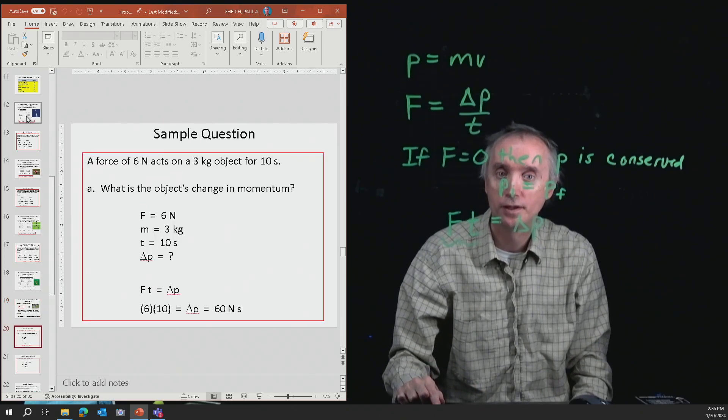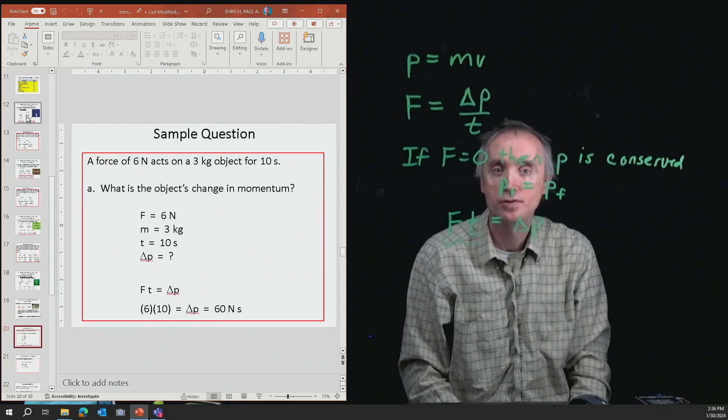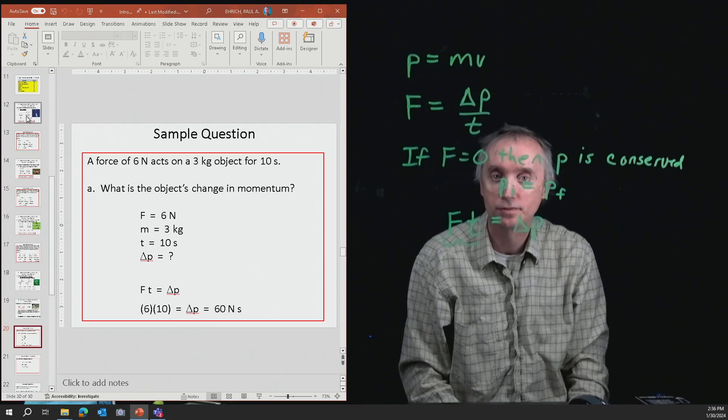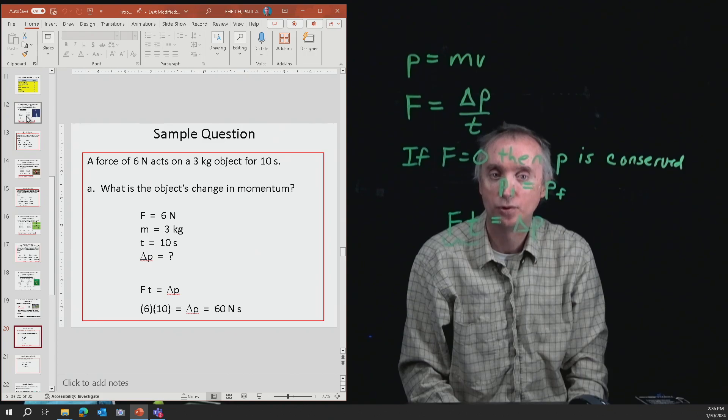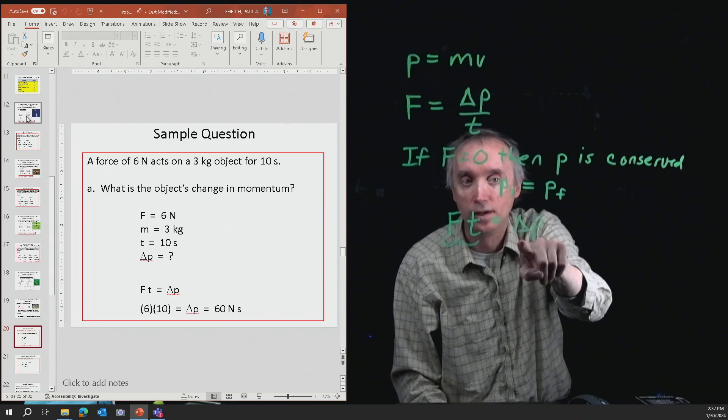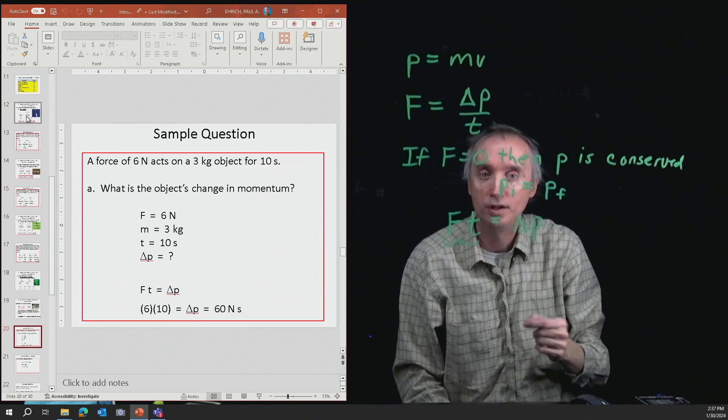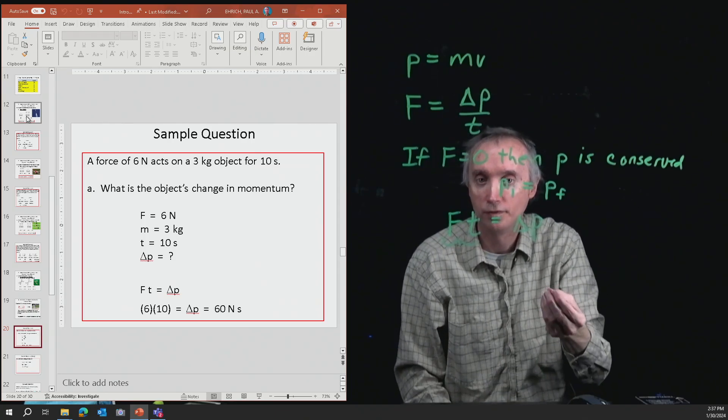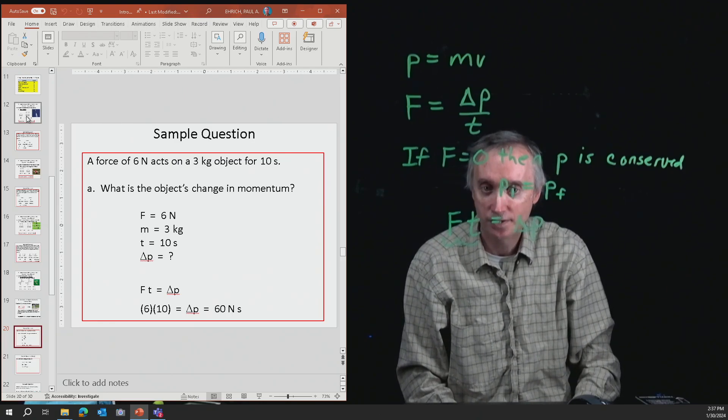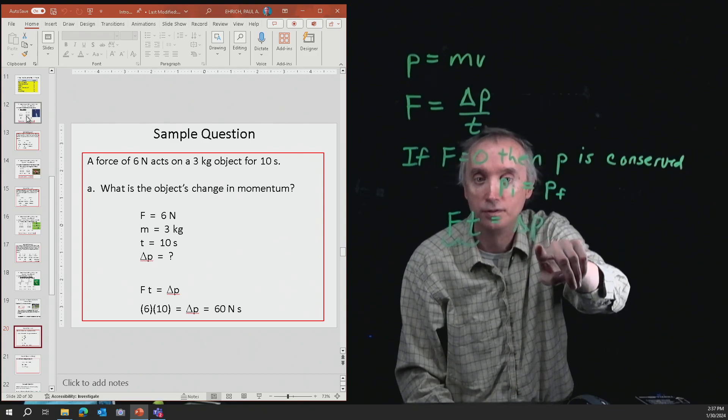Here's an example of how you would use this. A force of six newtons acts on a three kilogram object for 10 seconds. What was the object's change in momentum? The change in momentum is equal to the force multiplied by the time. We were given the force and the time, so multiply those together. Six times ten equals 60, so that's the change in momentum.